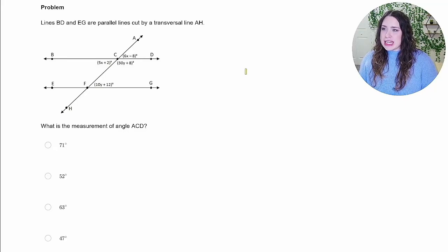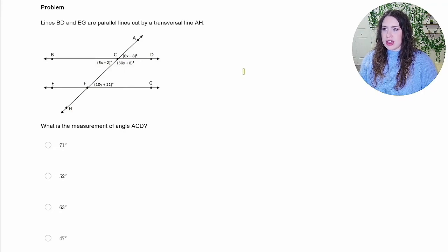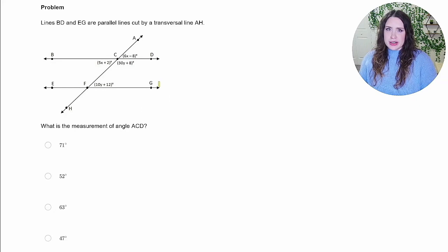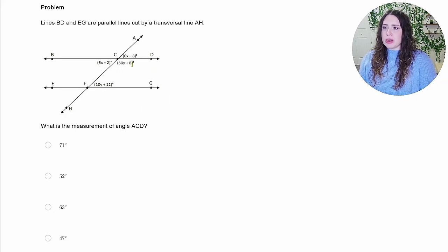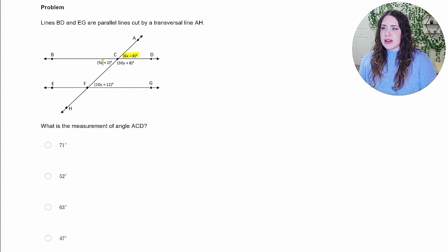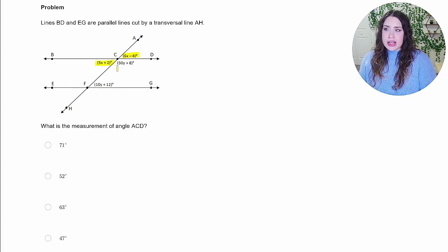Let's take a look at this first question. It says, lines BD and EG are parallel lines cut by a transversal AH. So we can see that here. Now, before I go on, I just want to point out that we have some congruent angles. For example, this angle and this angle are vertical angles, or this angle and this angle are corresponding angles. And so those are all going to be congruent.